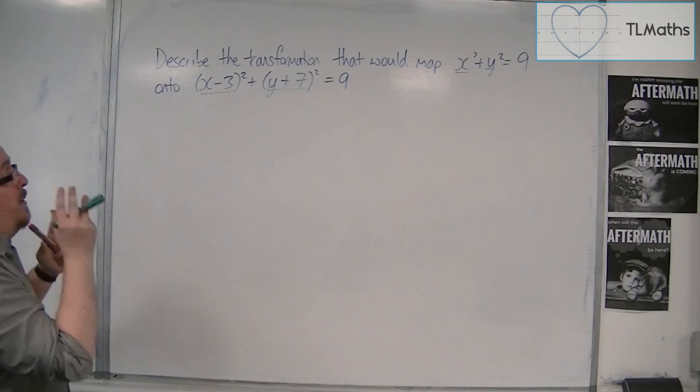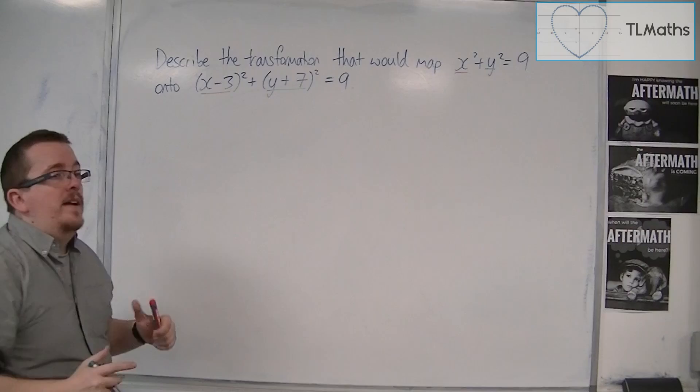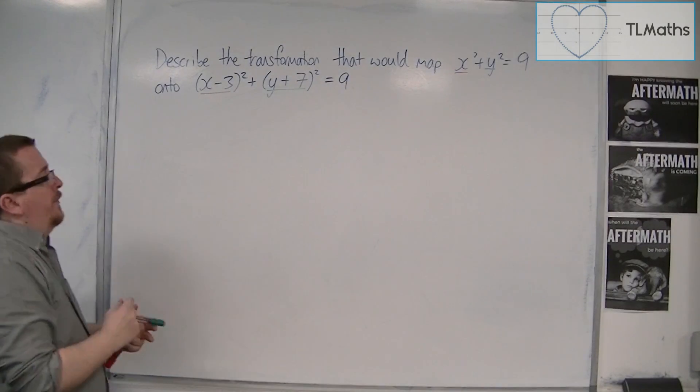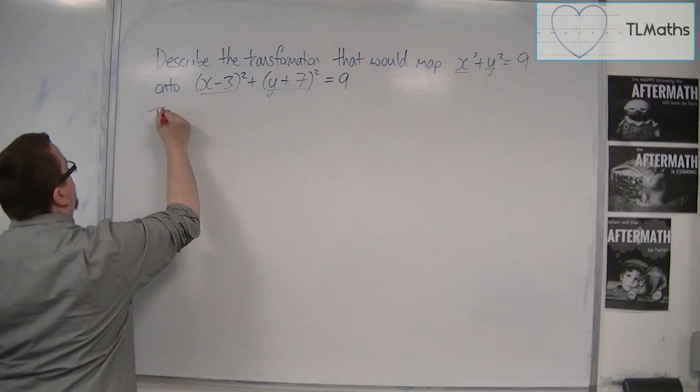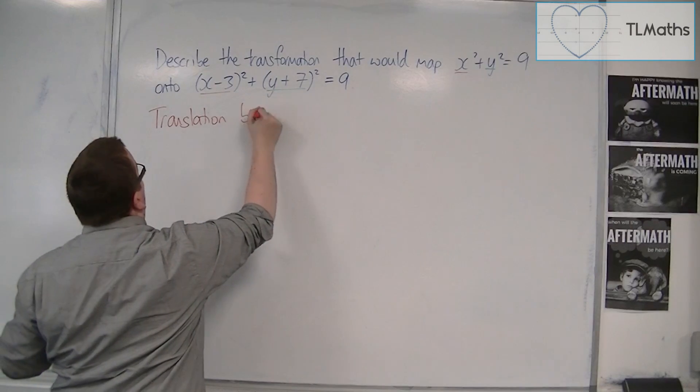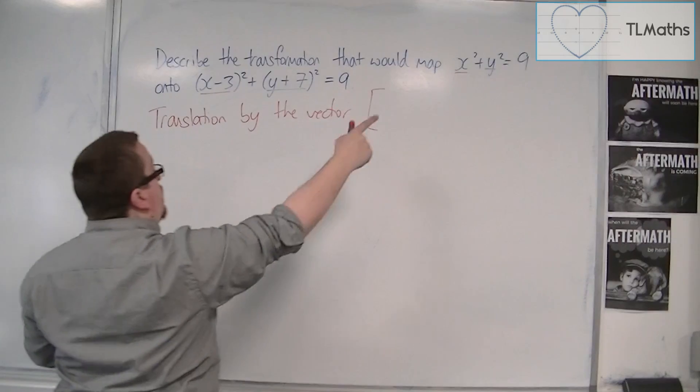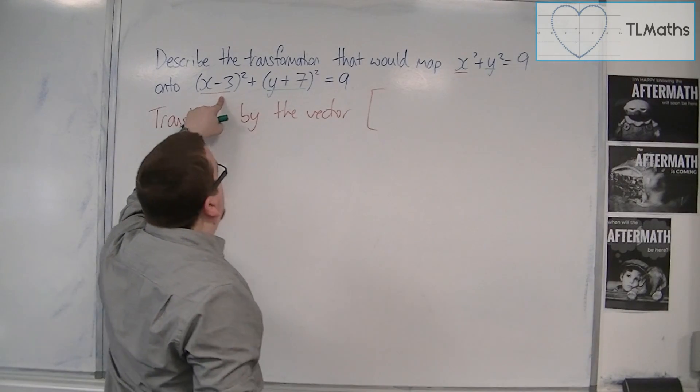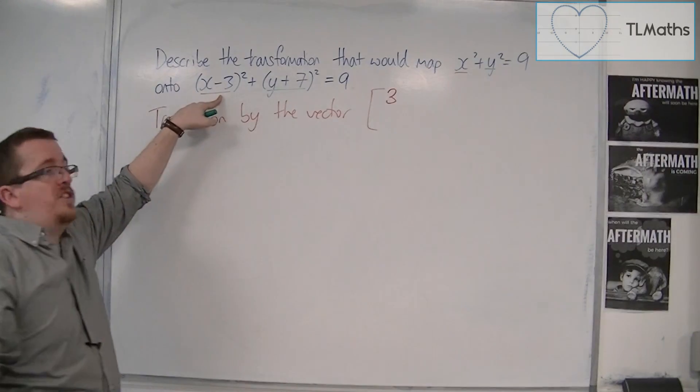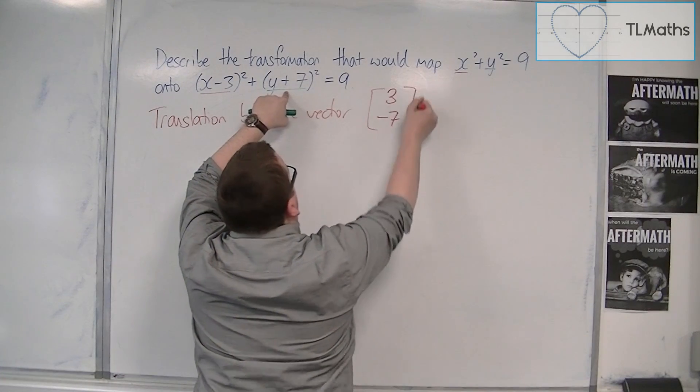Now if you replace the x with x minus 3, and you replace the y with y plus 7, this is a translation. So this is a translation by a particular vector. By the vector, in this case, because we've replaced x with x minus 3, that means that we've gone 3 in the x direction, so positive 3 in the x direction. And we've gone negative 7 in the y direction.